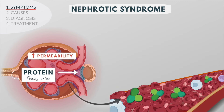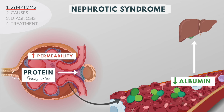Excessive protein excretion results in low levels of important proteins in the blood, such as albumin. The liver tries to compensate for this protein loss by increasing the synthesis of albumin, but at the same time it also releases more cholesterol and triglycerides.